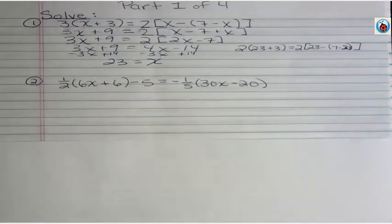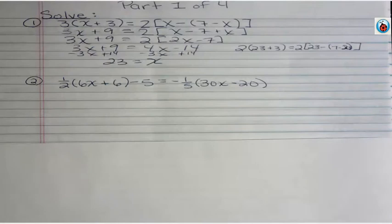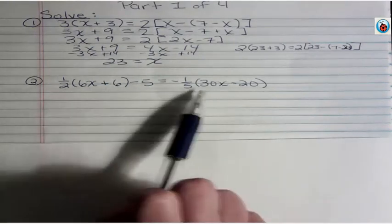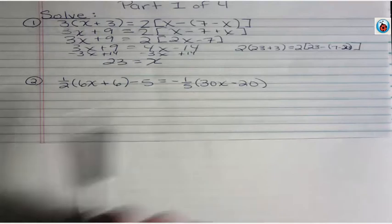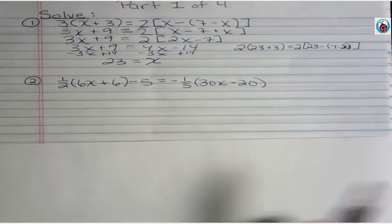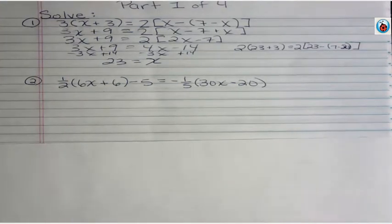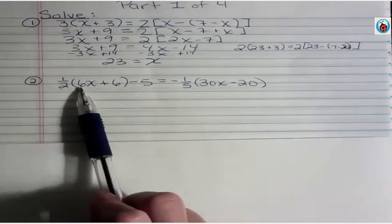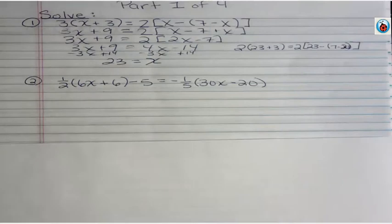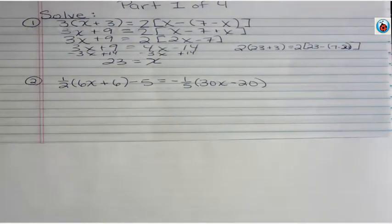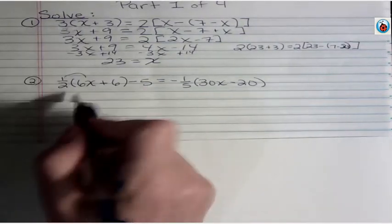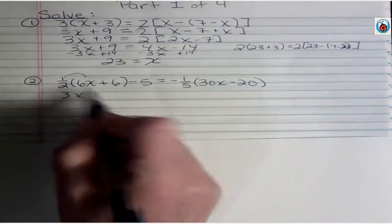Let's look at the next one. You may have equations like this where, do you see our problem right here? This 2 goes evenly into the 6, the 5 goes evenly into 30 and 20. So it makes it easy just to distribute the fraction here. But you may have problems where it won't go evenly. In that case you can clear the fractions out. I'm not going to do that on this video but you can clear out fractions first. I'm going to leave these in. One half times 6 is 3x. One half times 6 is 3.